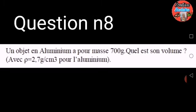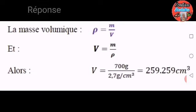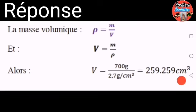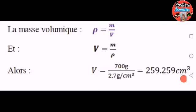Exercice numéro 8. Un objet en aluminium a pour masse 700 grammes. Quel est son volume avec ρ égale 2,7 grammes par centimètre cube pour l'aluminium ? Réponse. La masse volumique ρ égale M sur V, donc V égale M sur ρ. Alors, V égale 700 grammes sur 2,7 grammes par centimètre cube égale 259,26 centimètres cubes.